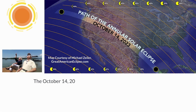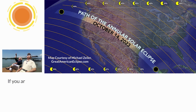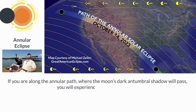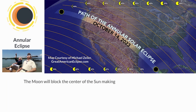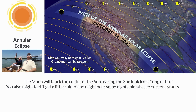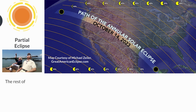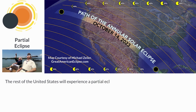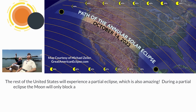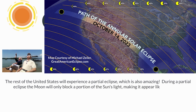The October 14, 2023 Solar Eclipse is going to be an exciting event. If you are along the Annular Path, where the Moon's dark Antumbral shadow will pass, you will experience an Annular Eclipse. The Moon will block the center of the Sun, making the Sun look like a ring of fire. You also might feel it get a little colder and might hear some night animals, like crickets, start singing. The rest of the United States will experience a partial eclipse, which is also amazing. During a partial eclipse, the Moon will only block a portion of the Sun's light, making it appear like a crescent.